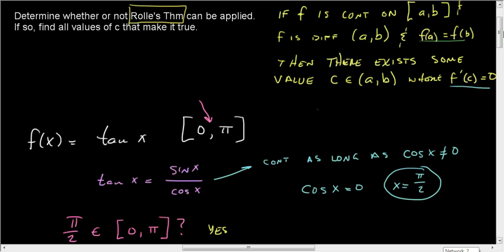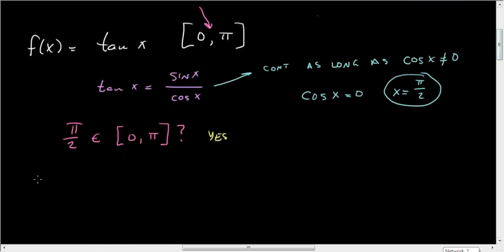So our first question is: is tangent x continuous on [0, π]? And the answer is no, it is not, because it is not continuous at π over 2.